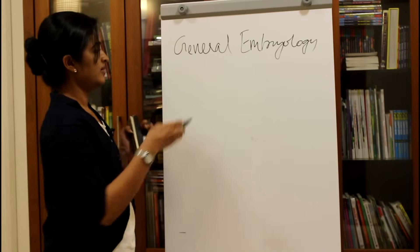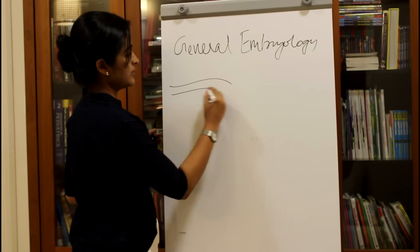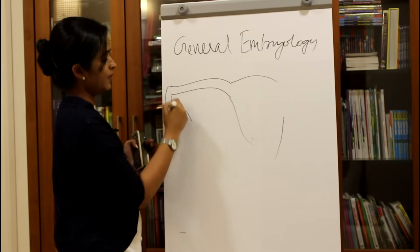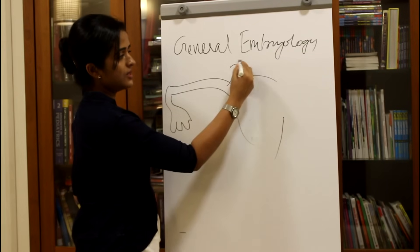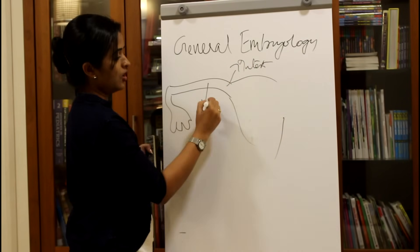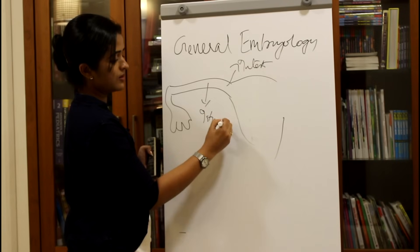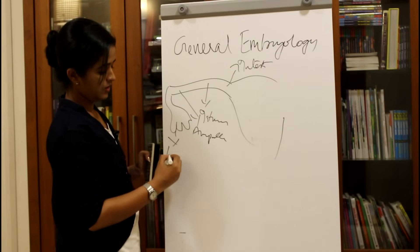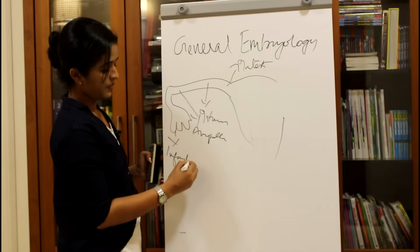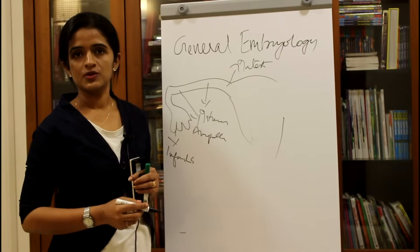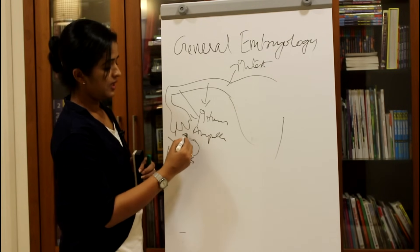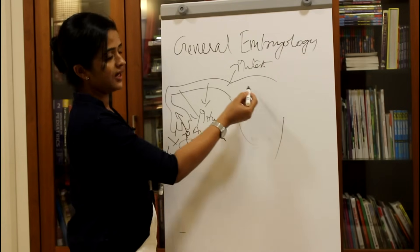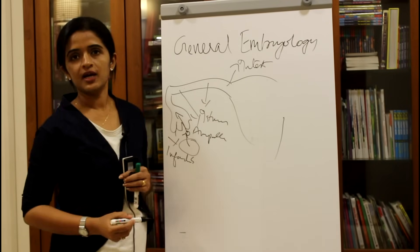The uterine tube is connected to the uterus, and the different parts of the uterine tube are: the interstitial part, the isthmus, the ampulla, and the extremity is called the infundibulum. These are the four parts of the uterine tube. The ovary will be releasing the oocyte which will be sucked up by the uterine tube, and the sperm will be carried through the uterine cavity to reach the ampulla.